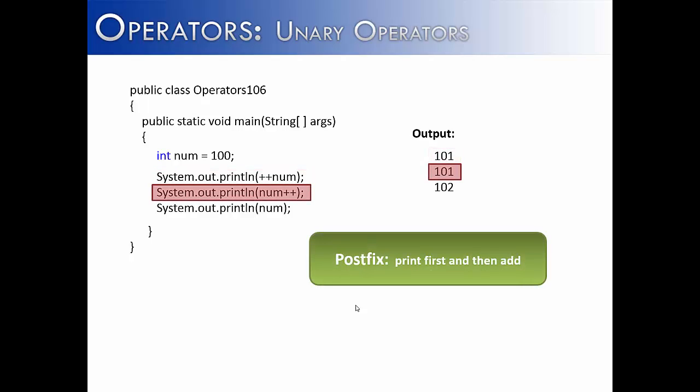Now in the next example, we have a postfix, but it's not going to do maybe what you're expecting. It is going to actually print the number first and then add one because the ++ is after the num. So we see if this were to print again, which it does, it would print 101 again, not 102.